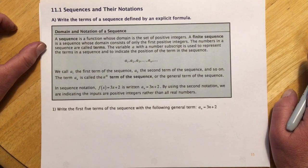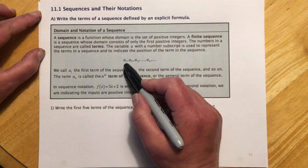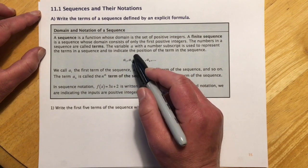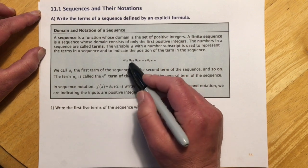The numbers in the sequence are called terms, and what we're going to see them is a list like this, where a sub 1 is the first term, a sub 2 is the second term, and the subscript indicates which term it is.